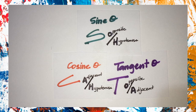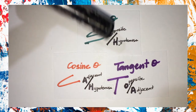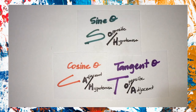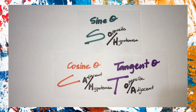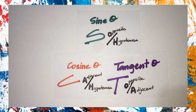SOH stands for the sine ratio, which is the opposite divided by the hypotenuse. CAH — cosine stands for the adjacent divided by the hypotenuse. And the tangent, or TOA, stands for the opposite divided by the adjacent. The opposite, the adjacent, and the hypotenuse are all sides of a right angle triangle in relation to an angle.